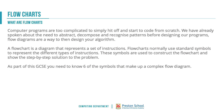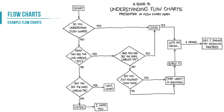It uses six key symbols at GCSE to define what is happening in a complex system, process, or algorithm. As shown in a mildly humorous example, there are different shapes meaning different things, with arrows connecting up the symbols. For example: do you understand flow diagrams? If yes, move down one route; if no, move down another.